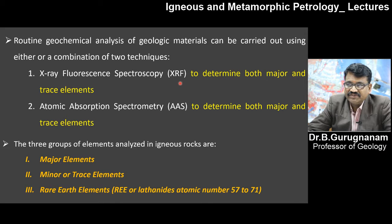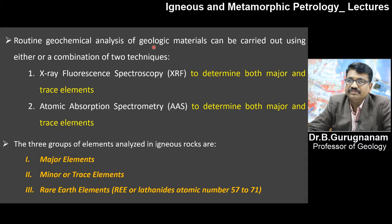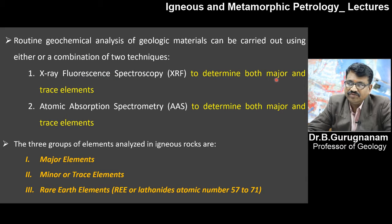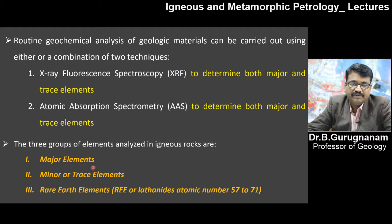For geochemical analysis of rock, a geologist can use either the XRF method or AAS method, or sometimes a combined method. XRF is used to determine major and trace elements. AAS is helpful to determine both major and trace elements. These two methods can be used individually or in combination for classifying your rock. The three groups of elements analyzed in igneous rocks are: major contribution, minor contribution, and trace contribution.